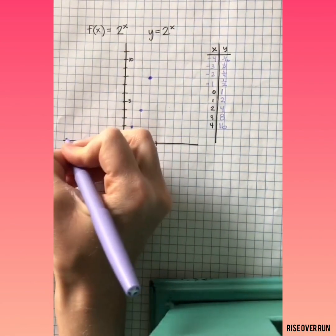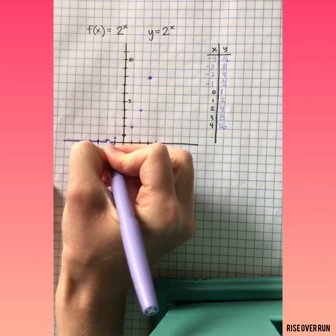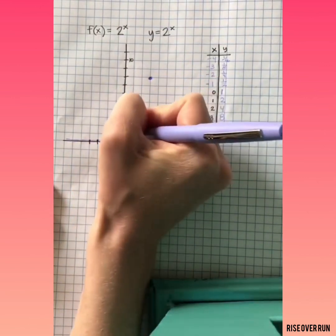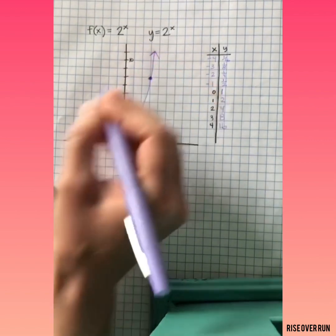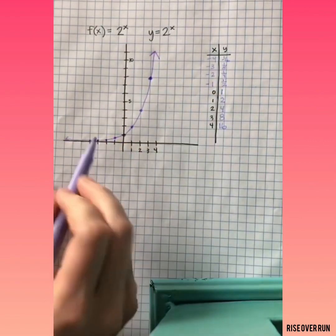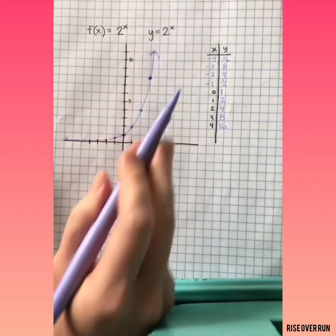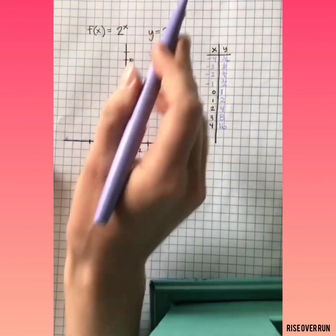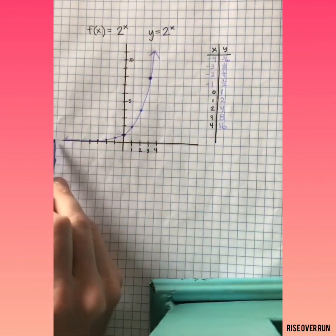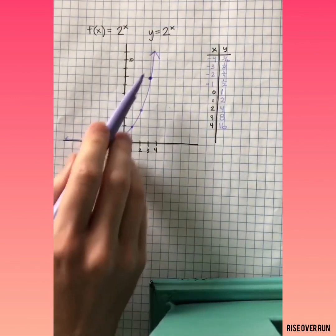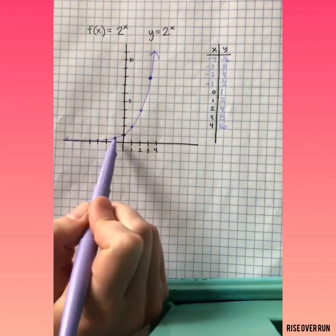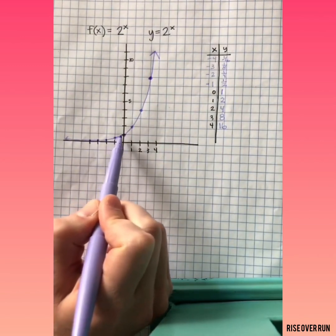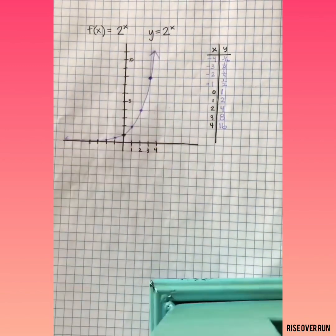If we connect these, we'll get the line of an exponential function. These will continue going in both directions, and it won't make a straight line. It'll keep getting lower and lower over here, and higher and higher on this side. An exponential function typically starts out growing slowly, and then picks up speed and grows very quickly.